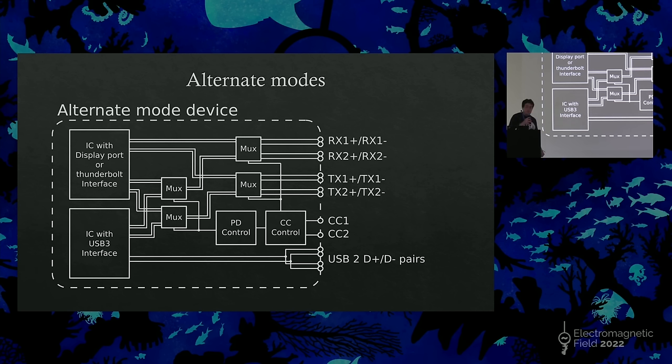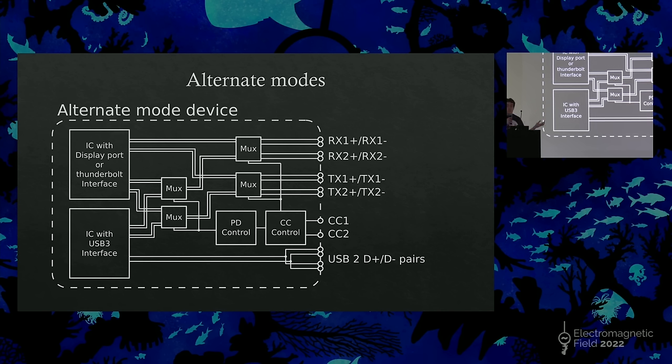You then end up with, to control that, your standard CC control to detect which way up the cable is and control the first muxes. And then, a power delivery control to actually deal with the negotiation and choose which modes that's in. Often, a lot of this can all end up being wrapped into a single IC on the board. But equally, you can also do it with separate chips much of the time.